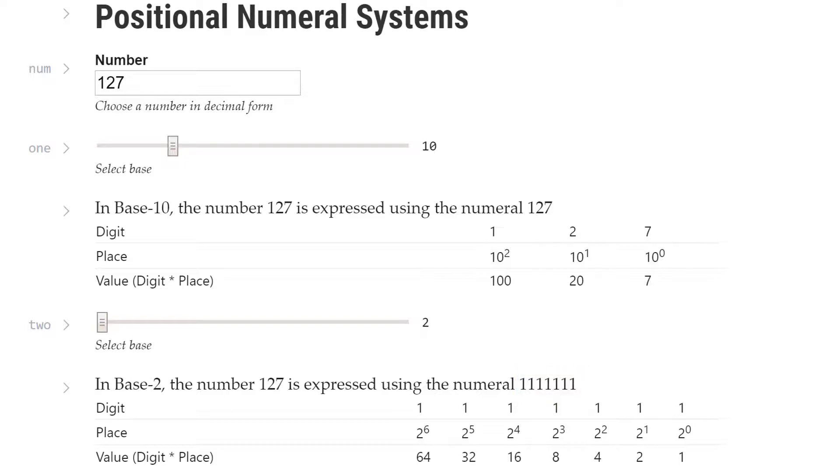One other important piece of information the base tells us is how many symbols are available for each digit. In decimal, we have 10 symbols, 0 through 9. And this determines how many ones we can represent in the ones place before we get our first group of 10. Let me show you what I mean.